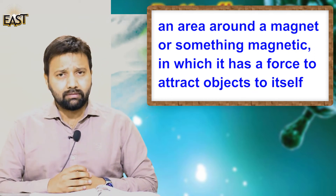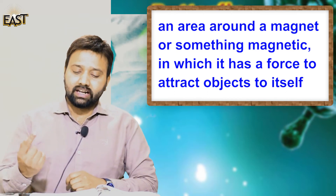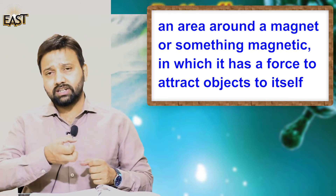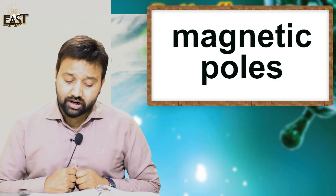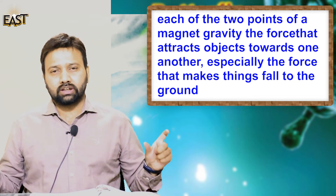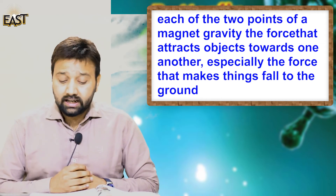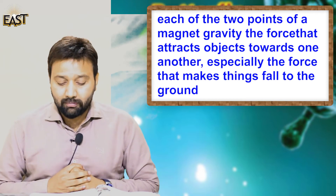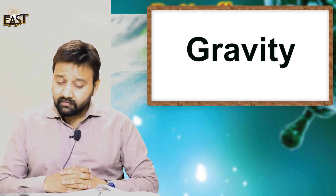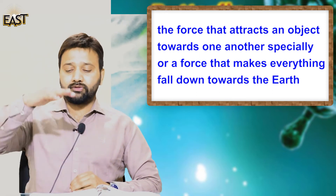The surrounding area around a magnet that has the power to attract things towards it is called magnetic field. Our next terminology is magnetic poles: each of the two points of a magnet — one is north and one is south — these are called magnetic poles. Our last terminology is gravity: the force that attracts objects towards one another, especially the force that makes things fall to the ground, is called gravity.